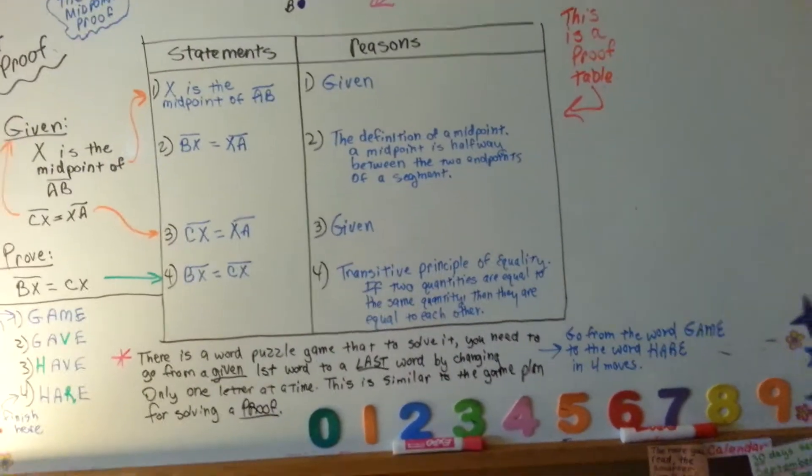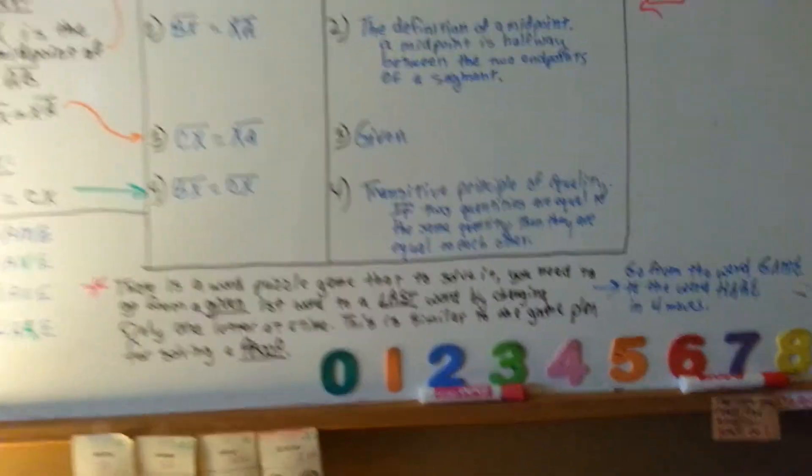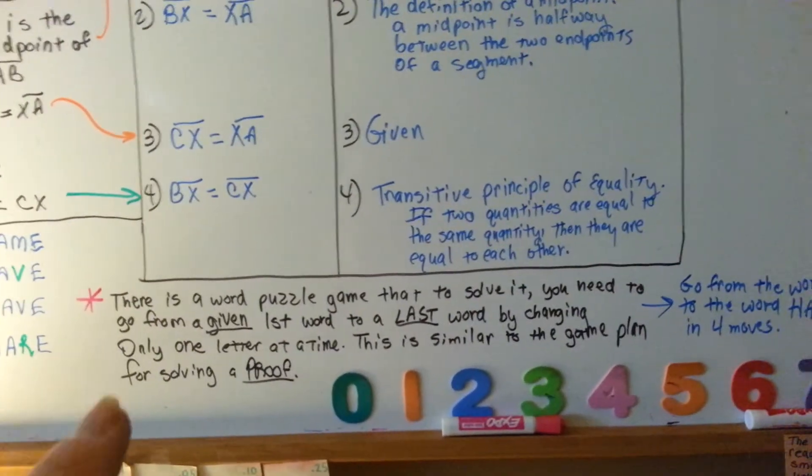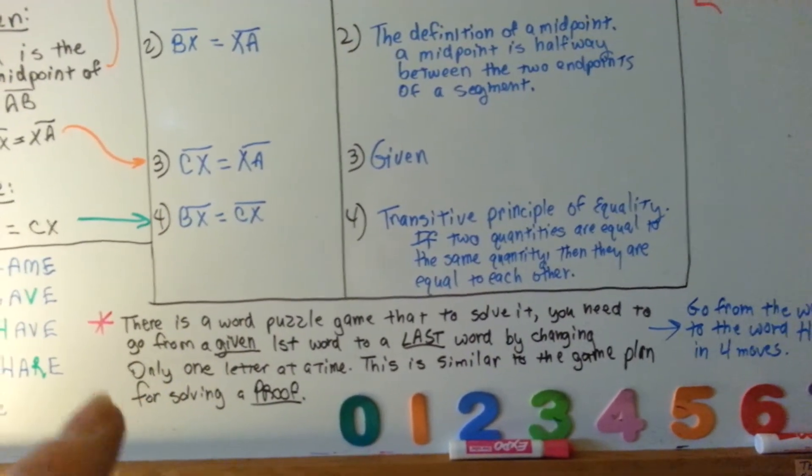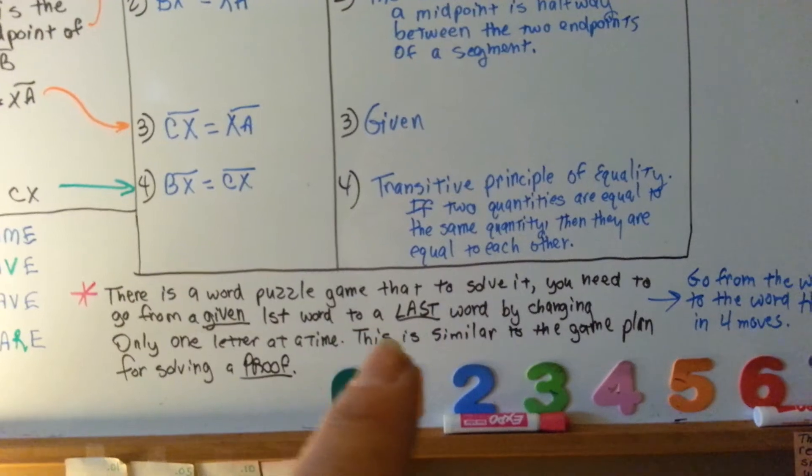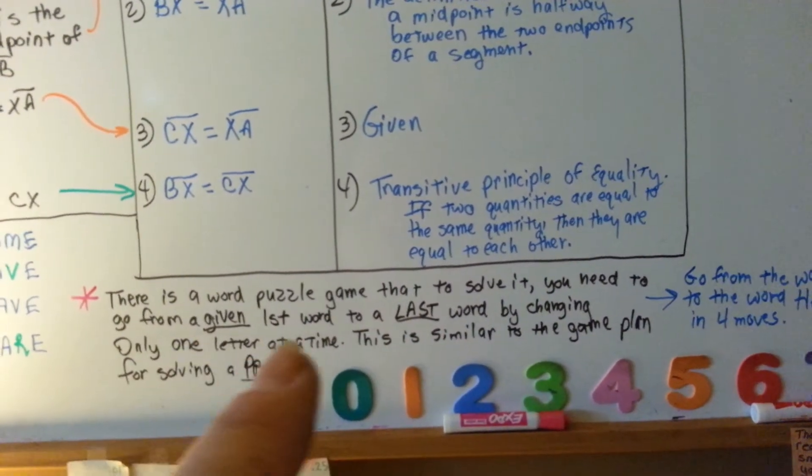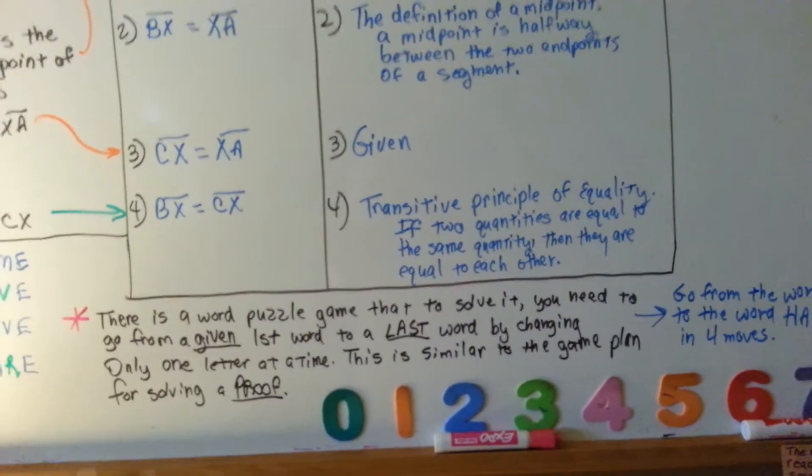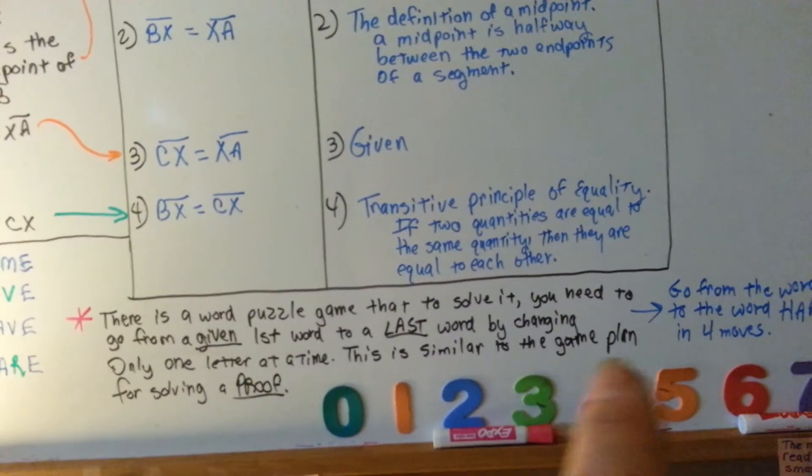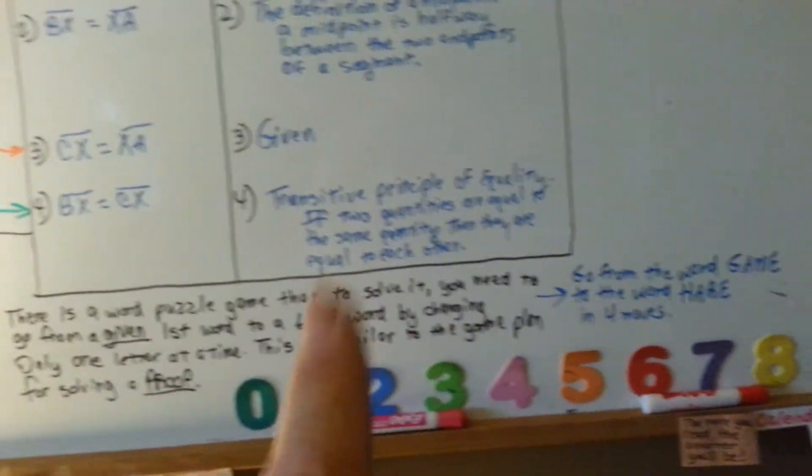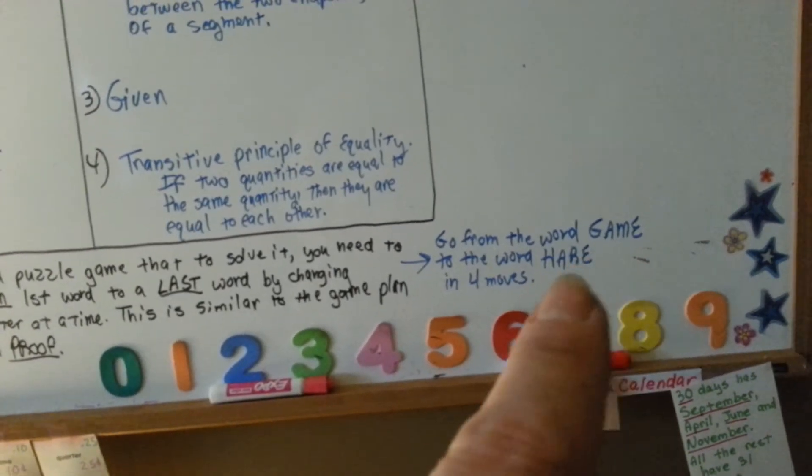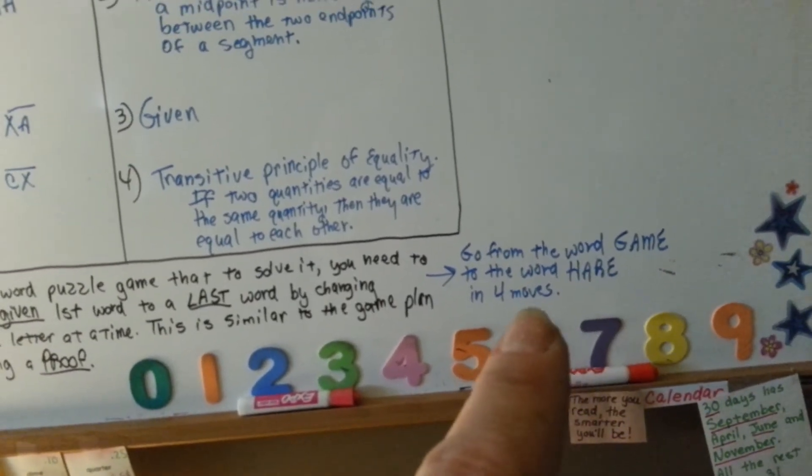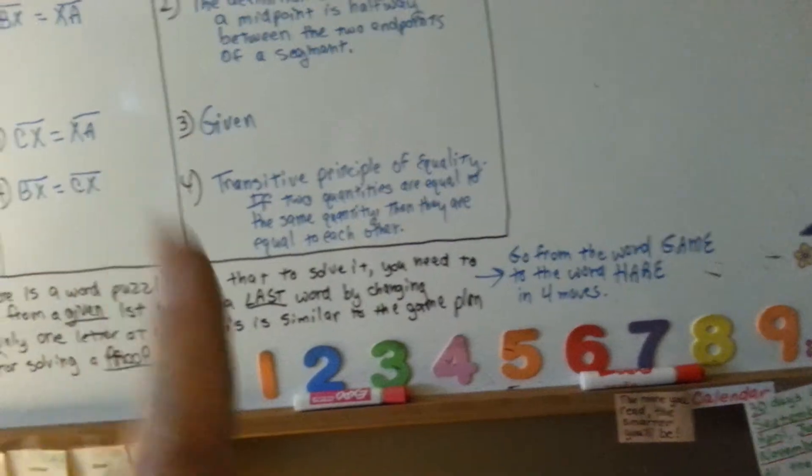So, to explain what I'm trying to say, I came up with this analogy. There is actually a word puzzle game that to solve it, you need to go from a given first word to a last word by changing only one letter at a time. They're in puzzle books. This is similar to the game plan for solving a proof. So, what if the puzzle book said you have to go from the word game to the word hair in four moves and you could only change one letter at a time?